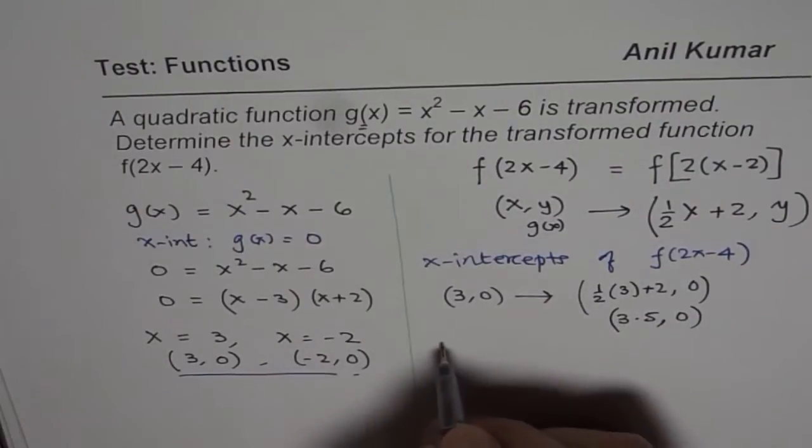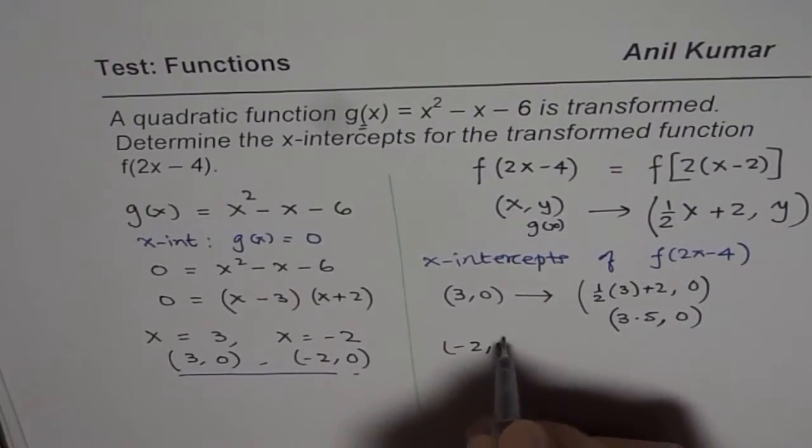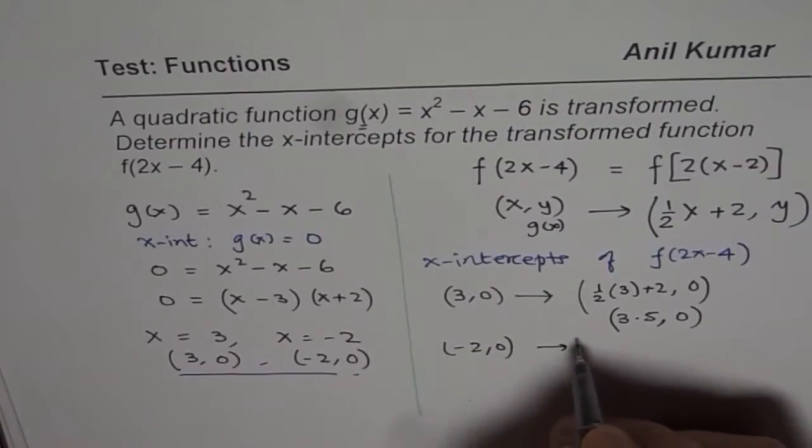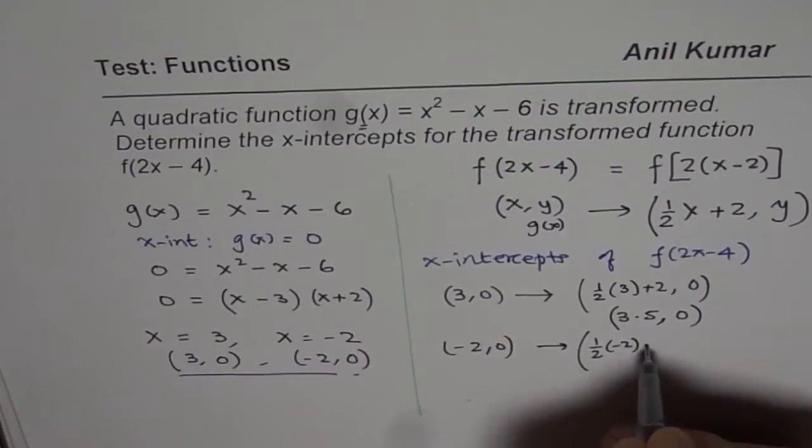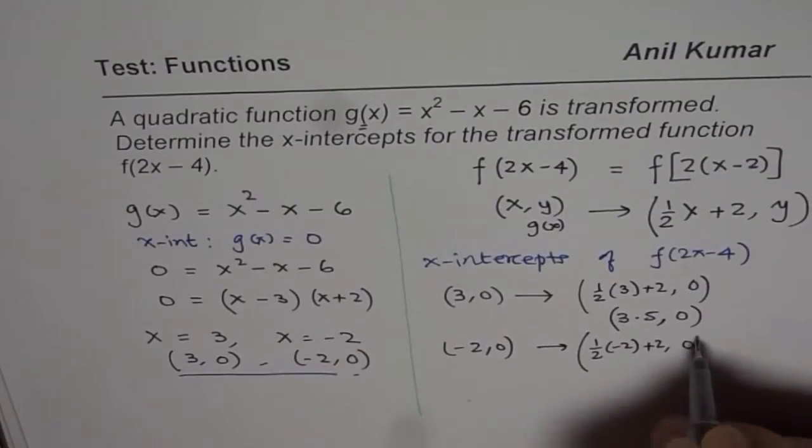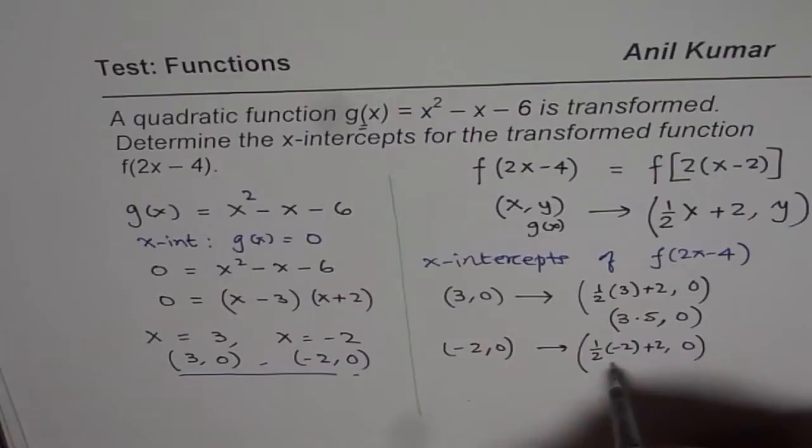The other point (-2, 0) transforms to (1/2)(-2) + 2 = -1 + 2 = 1, giving us the coordinate (1, 0).